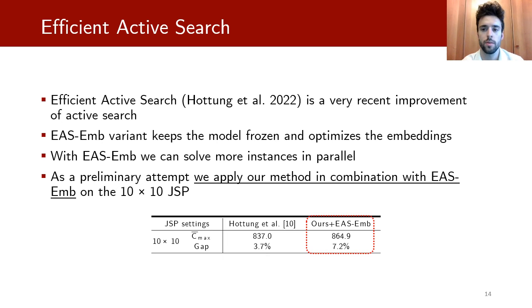Now I'm going to present a very early experiment that we did with efficient active search. Efficient active search is a very recent improvement of active search and it was presented in three variants. The best variant EAS-AMB keeps the model frozen and updates the embeddings. This gives the ability to solve more instances in parallel so it solves the fatal flaw of active search. As a preliminary attempt we applied our method with EAS-AMB on the 10x10 JSP and obtained better results in less time. This shows the potential of EAS-AMB with our method.